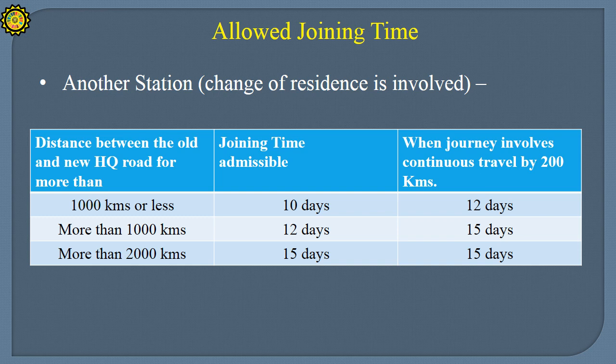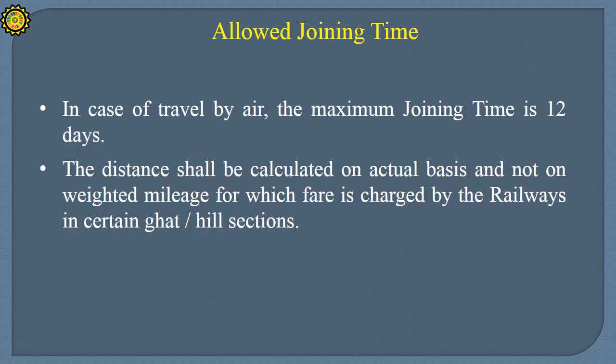When distance is more than 1000 km, joining time admissible is 12 days. If travel is by road and distance is more than 200 km, 15 days are admissible. When distance is more than 2000 km, admissible joining time is 15 days. In case of travel by air, the maximum joining time is 12 days. The distance shall be calculated on actual basis and not on weighted mileage for which fare is charged by the railways in certain ghat or hill sections.